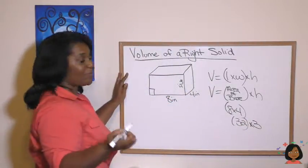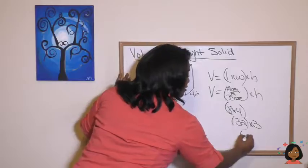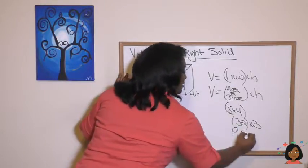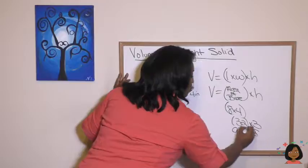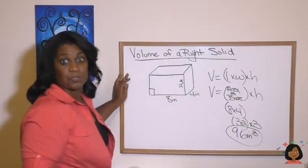And then now we just do our multiplication. 3 times 2 is 6, 3 times 3 is 9. We have 96 inches cubed, because volume is always cubed.